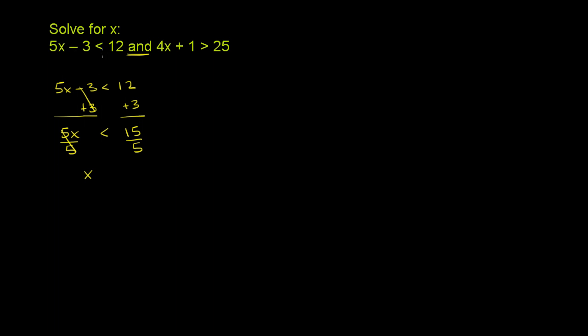We divide both sides by positive 5, and we are left with, just from this constraint, x is less than 15 over 5, which is 3. So that's that constraint. But we have the second constraint as well.